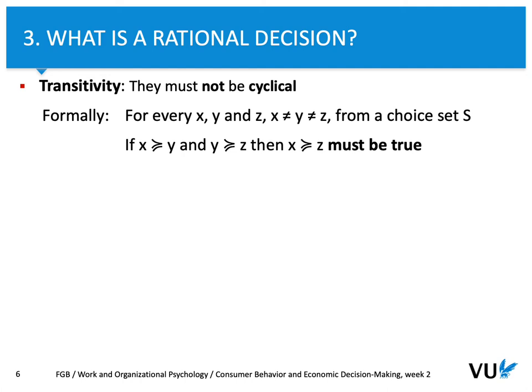In other words, we can say that if X is more preferred than Y and Y is more preferred than Z, then X is also more preferred than Z — and this must be true. On the other hand, if X is the same as Y, Y is the same as Z, and X is the same as Z, then this must be true as well. Basically, we need to assume that if X is higher than Y and Y is higher than Z, then X must be higher than Z. So X must be preferred over Z.